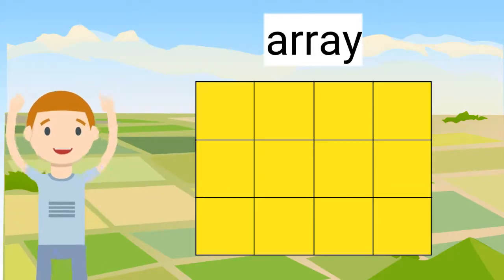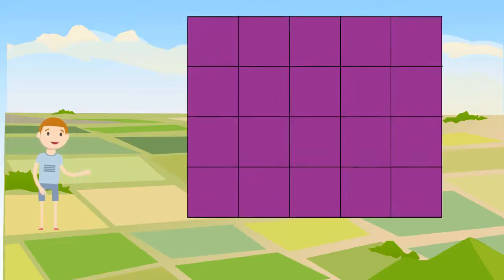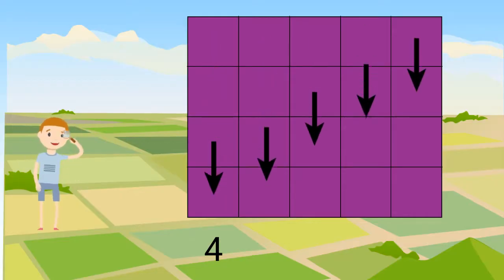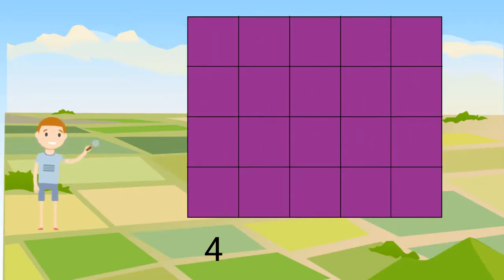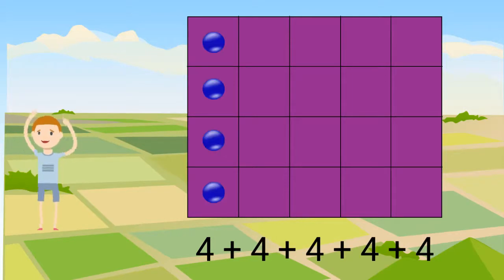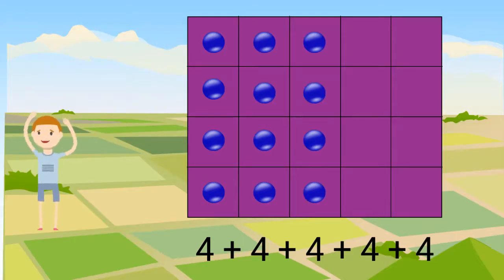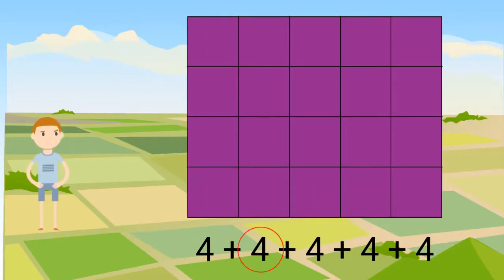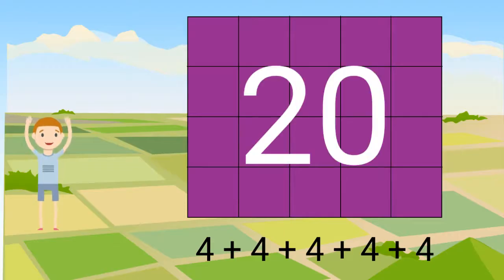Arrays help us to add numbers together. Look at this array. This rectangle has already been divided into rows and columns. Each column is made of 4 squares. This means that we are adding 4 each time. I also see that there are 5 total columns, so we are going to add 4, five times: 4 plus 4 plus 4 plus 4 plus 4. We can count by 4's five times: 4, 8, 12, 16, 20. This rectangle has been divided into 20 squares.